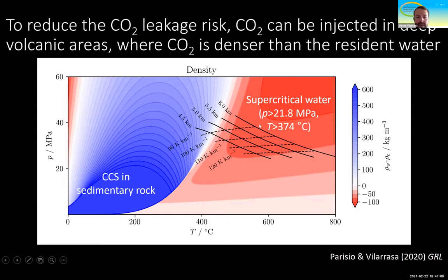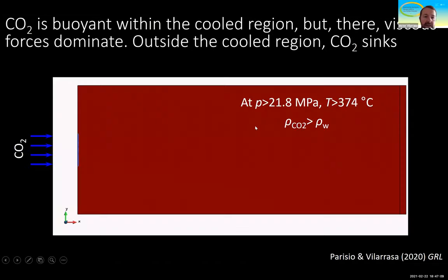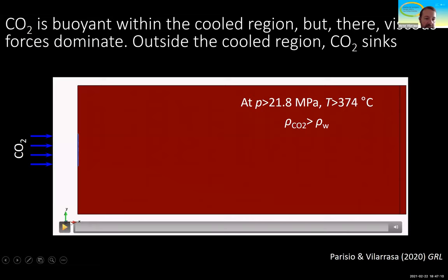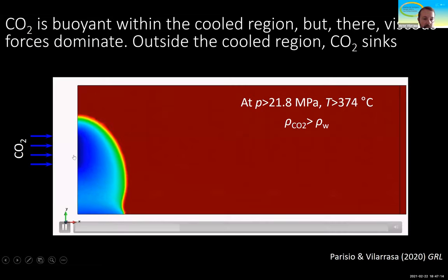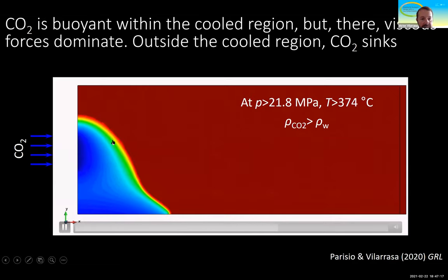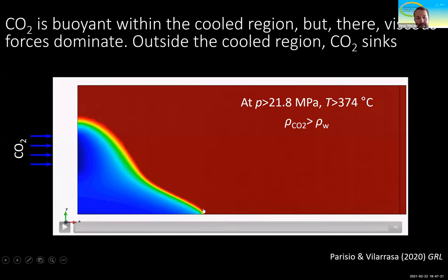CO2 will therefore tend to sink. Here you can see a simulation of how the CO2 plume evolves when injected through a vertical well. As the CO2 plume is injected into the formation, it sinks and finally advances preferentially through the bottom of the storage formation.